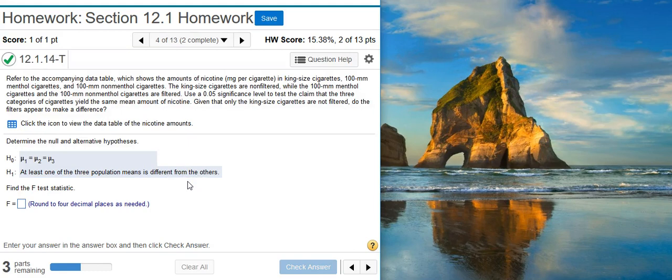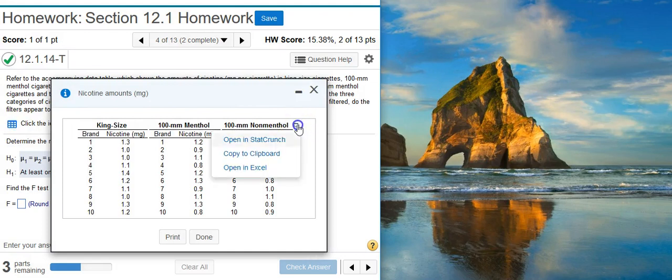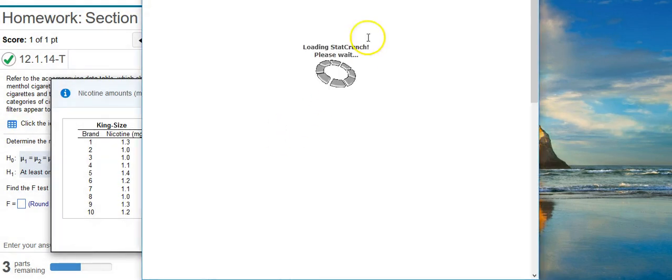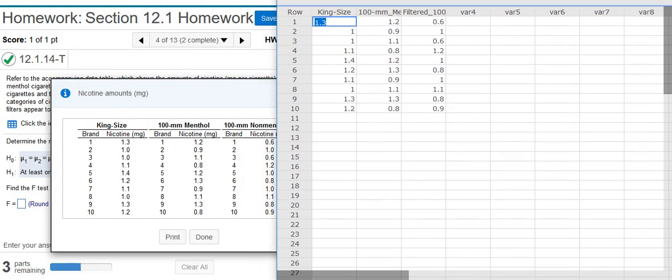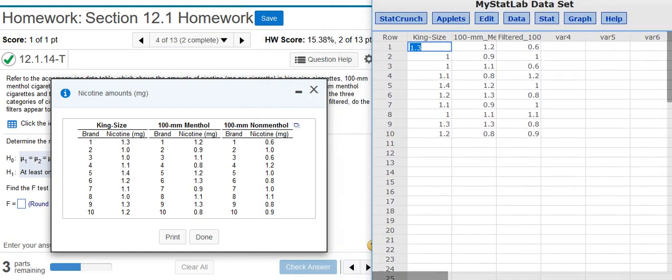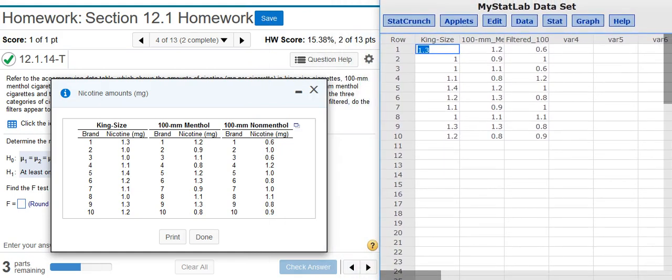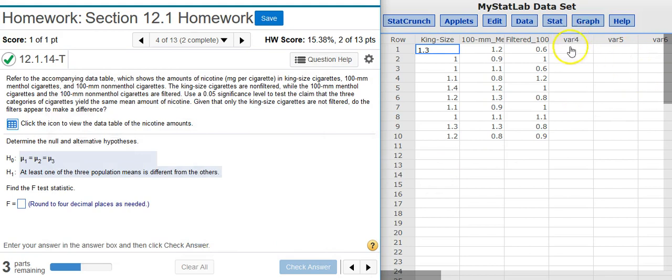Now the next part asks us to find the F-statistic. To do that, I'm going to use StatCrunch. To use StatCrunch, I need to get the data in first. I'm going to click on this icon and open my data in StatCrunch. And I'm going to move this window over so we can see everything that we're doing.